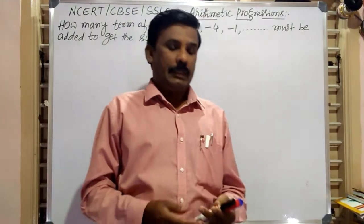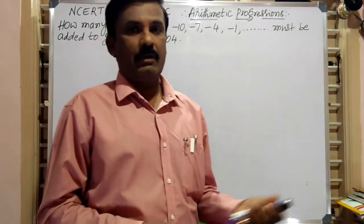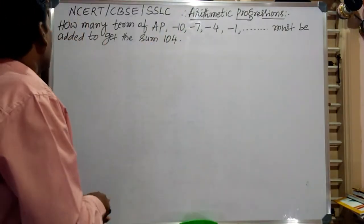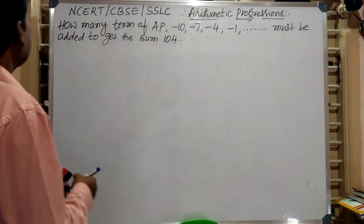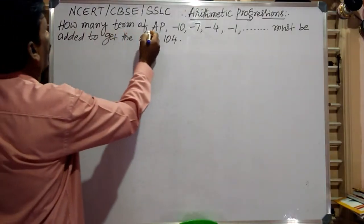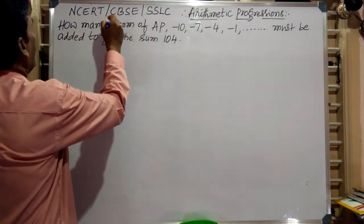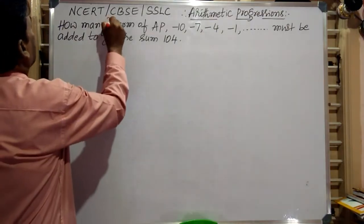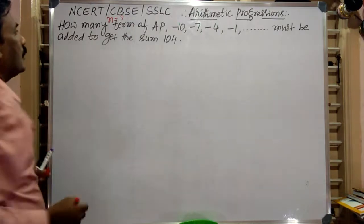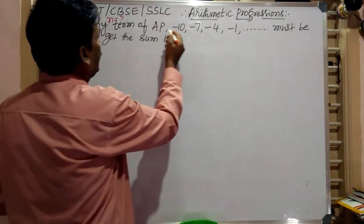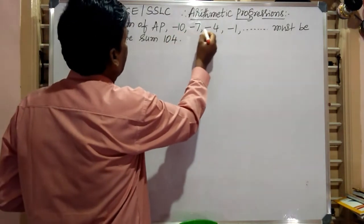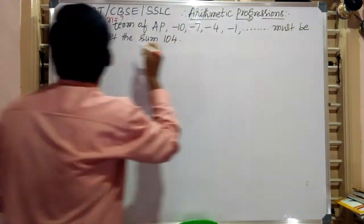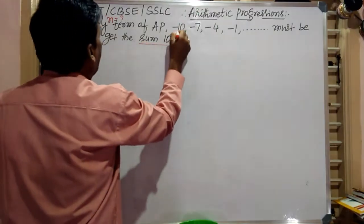Now this is the second application-level question. The question says: how many terms of the AP must be added to get the sum 104? We have to find n. The given arithmetic progression is minus 10, minus 7, minus 4, minus 1. That must be added to get the sum 104.